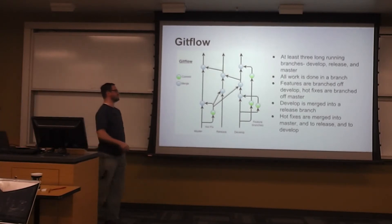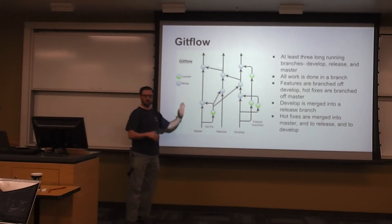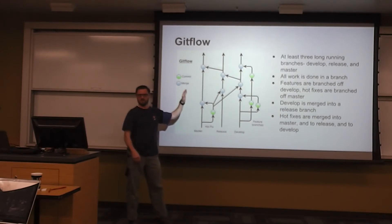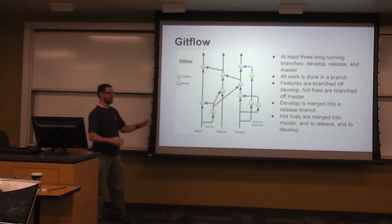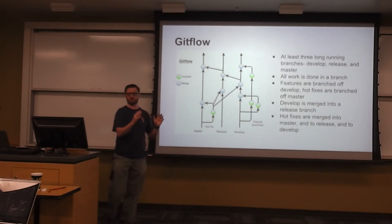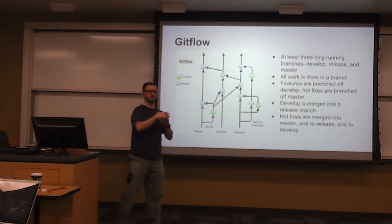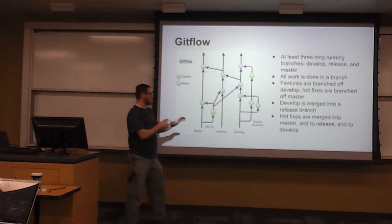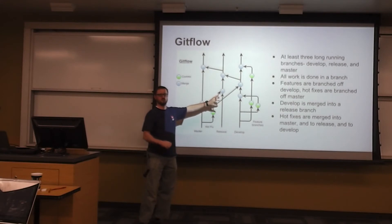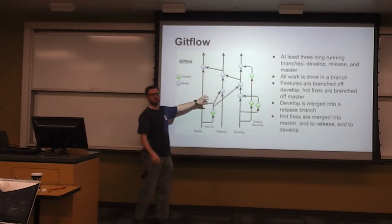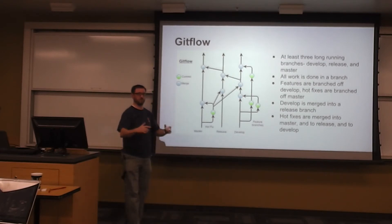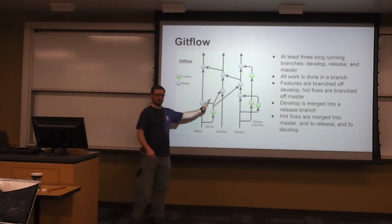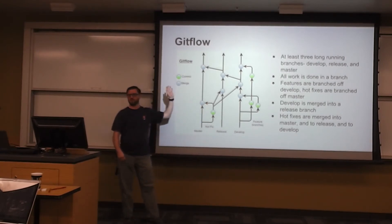Git Flow depends primarily on long-running branches — branches that exist over time. You have master, a release branch, and a develop branch. All work is done off of the development branch: you branch off, do your feature, and merge back in. At some point the development branch gets approval to be merged into a release branch, which is then QA'd, sent to Jenkins for automated testing, and prepped for actual deployment. The release branch, once given the greenlight, is merged into master, which is then pushed out to production.